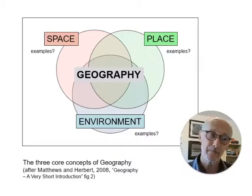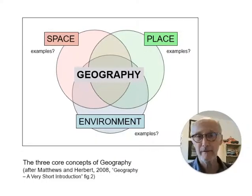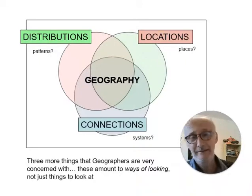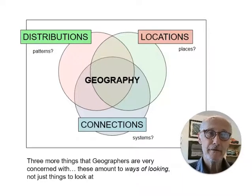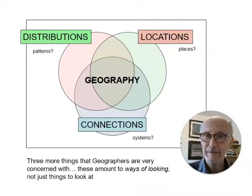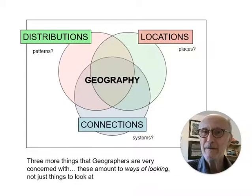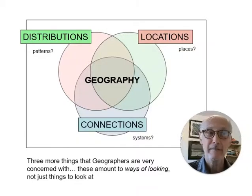Have a think about it for yourselves and try to come up with your own definitions and examples of what geographers mean by space, place, and environment. Certainly, as Matthews and Herbert say, those are core concepts in geography. And in looking at space, place, and environment, geographers are very interested in things such as distributions, locations, and connections — what we would automatically call the geographical or spatial aspects of something.